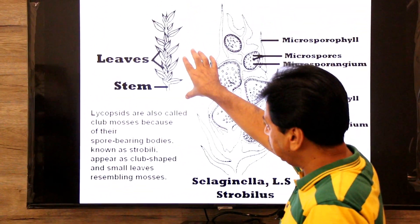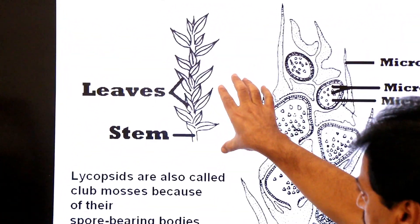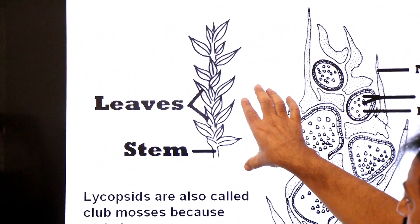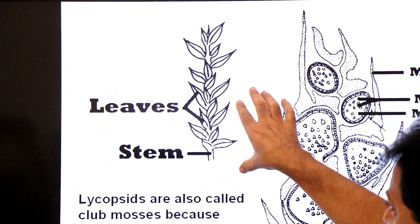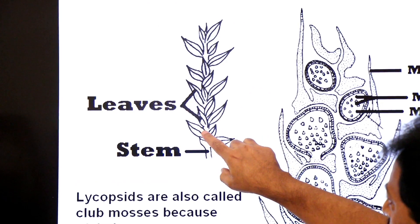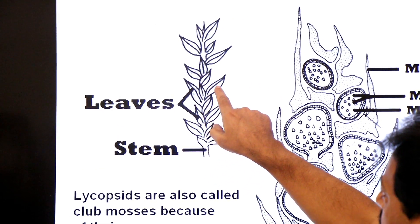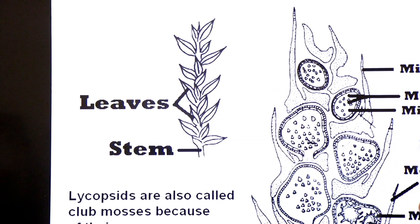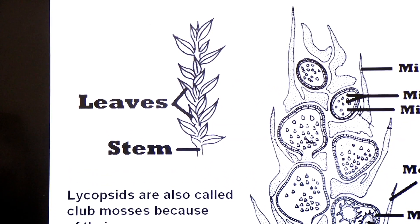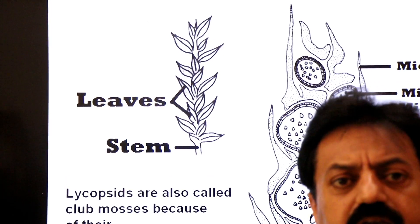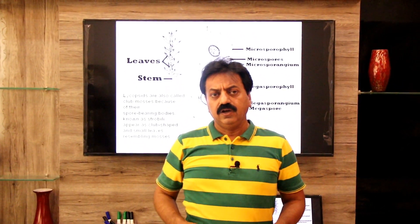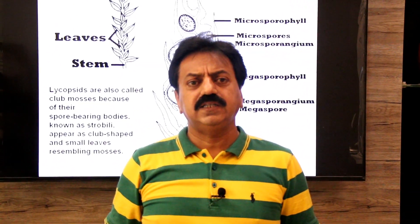The leaves of Lycopsida — as we studied in the evolution of leaf — are single-veined leaves called microphylls. So this is the origin of their name.